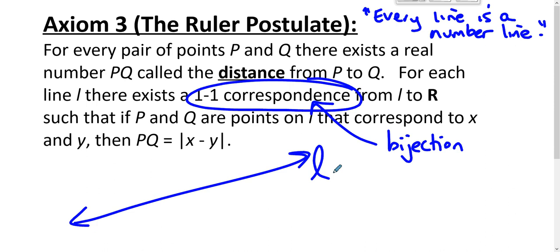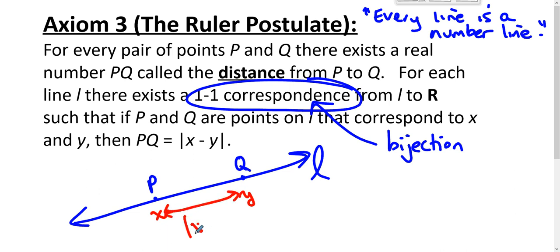If you have some line L with two points on it, there is a number that corresponds to P and a number that corresponds to Q, and the distance between P and Q is the absolute value of x minus y. These are points; these are real numbers. This gives us the whole idea of distance — we are subtracting real numbers, and real numbers behave very nicely. This also enables us to talk about betweenness.